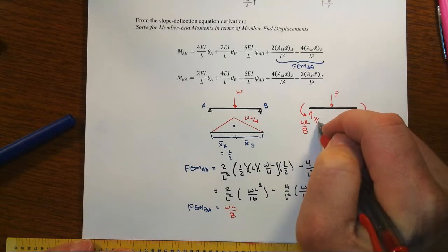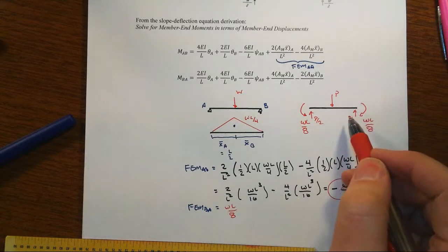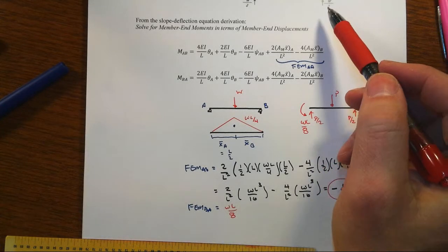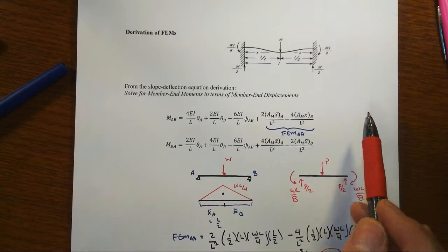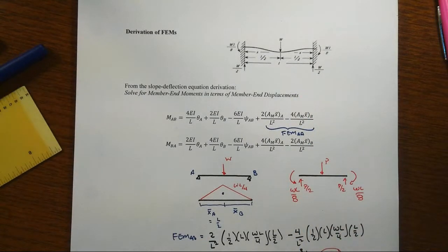With no surprise, given all that symmetry, the end shears, or the fixed end shears, would be P over 2 in this case. And that's how you would derive then what you find in the tables for those fixed end moments.